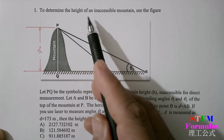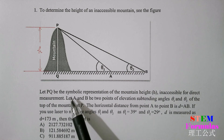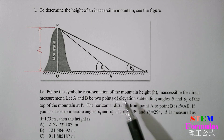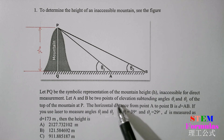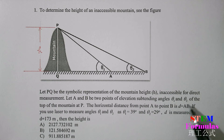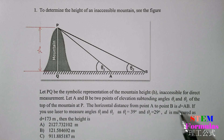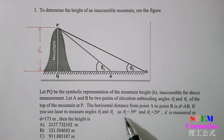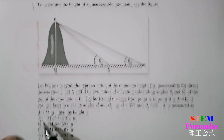To determine the height of an inaccessible mountain, see the figure. Let PQ be the symbolic representation of the mountain's height, inaccessible for direct measurement. Let A and B be two points of elevation subtending angles θ1 and θ2 at the top of the mountain at P. The horizontal distance from point A to point B is D equals AB. Using laser to measure angles, θ1 equals 39 degrees, θ2 equals 29 degrees, and D is measured as 173 meters. Find the height from the given choices.